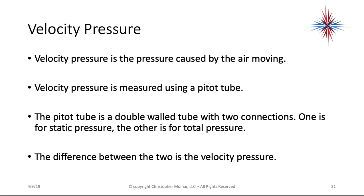Velocity pressure is another pressure we discuss. Velocity pressure is the pressure caused by air moving, and it is measured using a pitot tube. The pitot tube is a double-wall tube with two connections — one gives you a static pressure reading and the other is for total pressure. The difference between the static pressure and the total pressure is your velocity pressure. Velocity pressure is strictly the pressure of the air moving in the ductwork, and static pressure cannot be included in that reading — that's why we subtract it out.